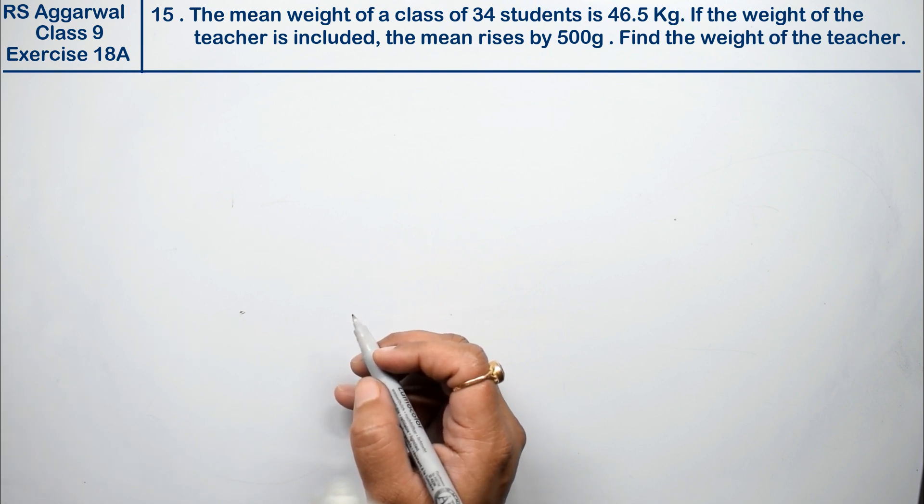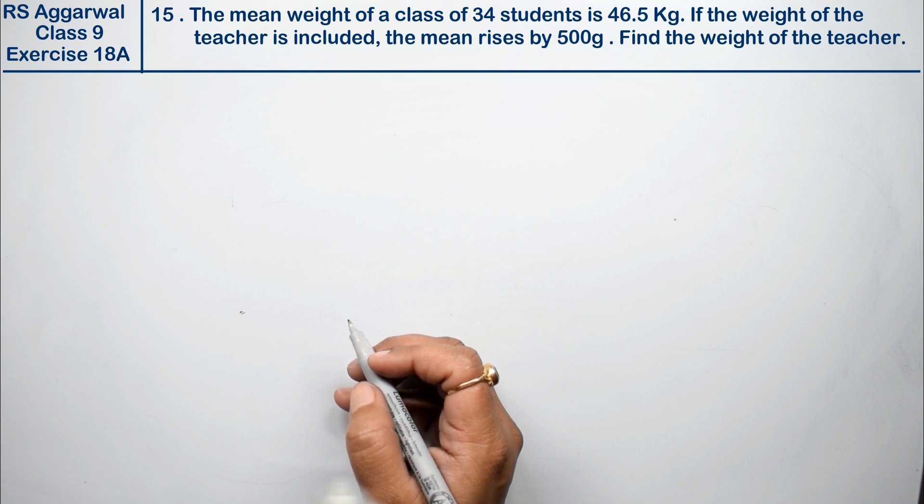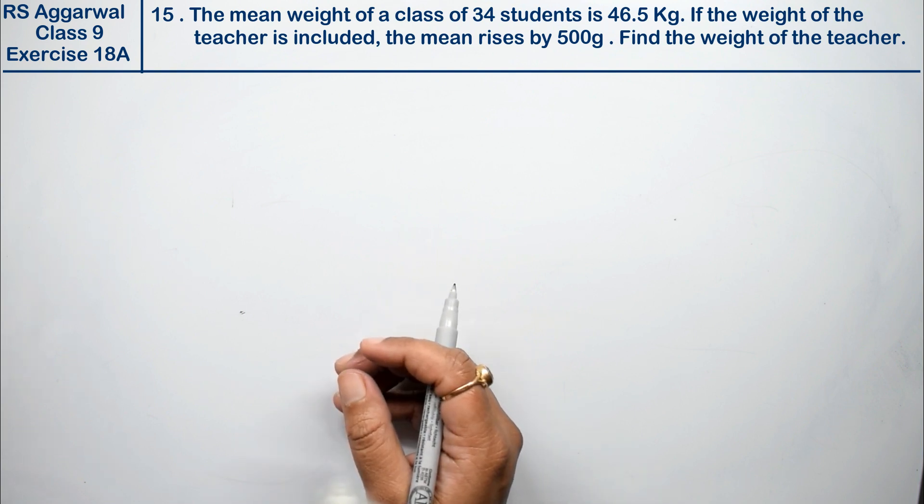Friends, 34 students' mean weight is 46.5 kg. If the weight of the teacher is included, if we include the teacher's weight, then the mean weight will rise by 500 grams. Find the weight of the teacher.